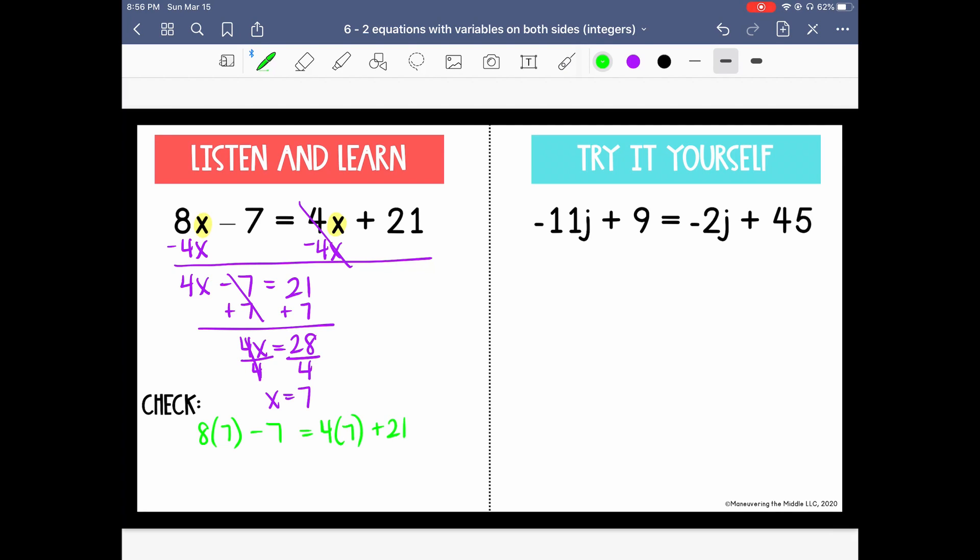So as we work through, 8 times 7 is 56. 4 times 7 is 28, 56 minus 7 is 49, and 28 plus 21 is also 49. So since that's equal and true, we know we solved it correctly.